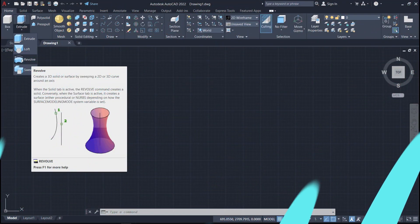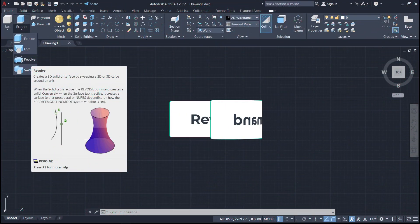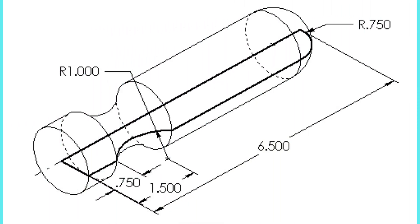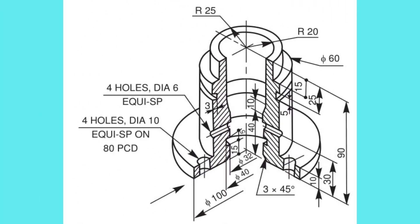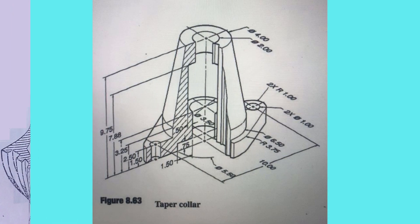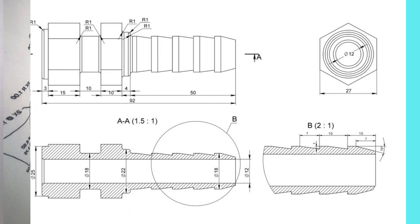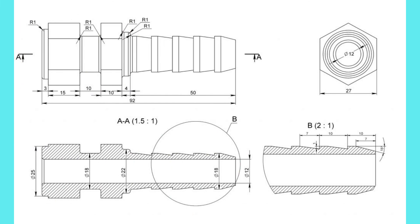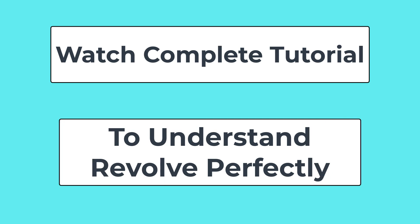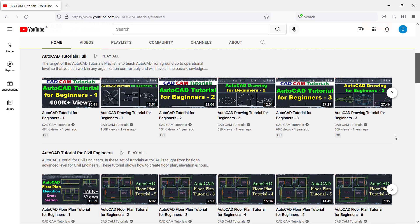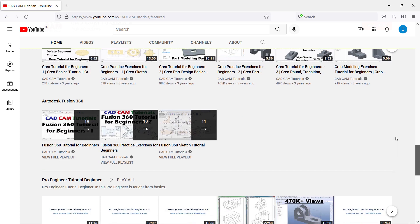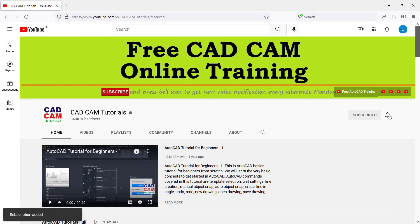In this tutorial, we will learn the Revol command. Revol command is useful to create shapes like this in AutoCAD 3D very easily. If we try creating these shapes using other AutoCAD 3D commands, it will be time consuming and sometimes not possible. But with Revol this can be done very easily. Please watch this complete tutorial to understand the Revol concept perfectly. Please subscribe to this channel, press the bell icon, and also like and share this video.